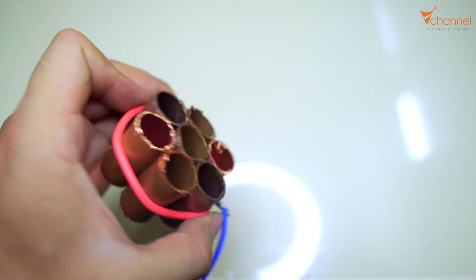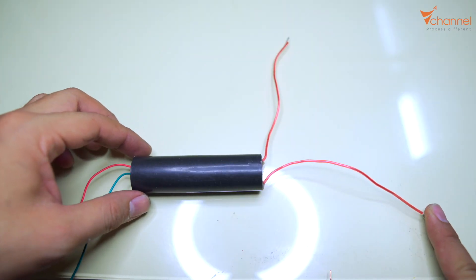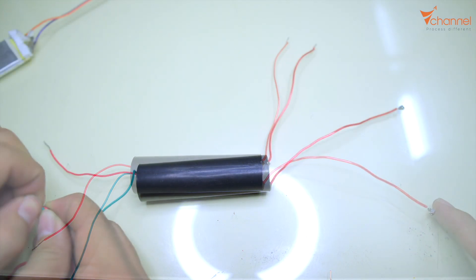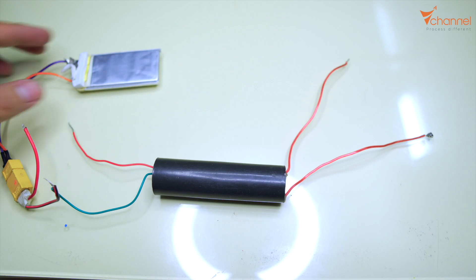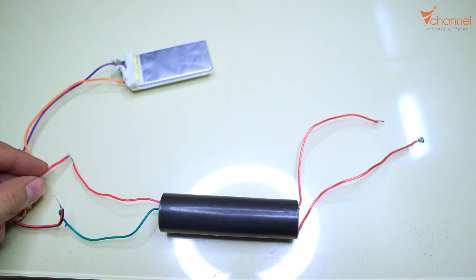Another important part we need is a high voltage generator module. It will convert from 3 to 6 volts to 1000 kV. Now we connect a lithium polymer battery. When supplying electric, we will hear it has a sound, like this.